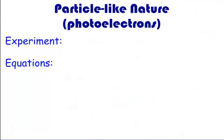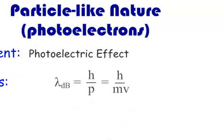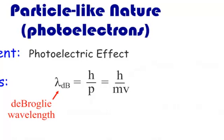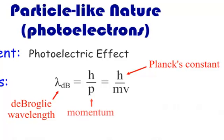Now let's take a look at the particle-like nature of light, which involves photoelectrons. There is an experiment that proves that light acts like a particle, and that's called the photoelectric effect. Any time you're doing particles, or if you see the word 'electron' in an atomic problem, use the de Broglie wavelength equation. The de Broglie wavelength equals H (Planck's constant) over P, which is momentum. Momentum is mass times velocity, and the mass we use is the mass of the electron: 9.11×10⁻³¹ kilograms.